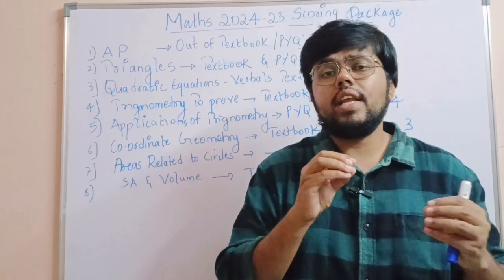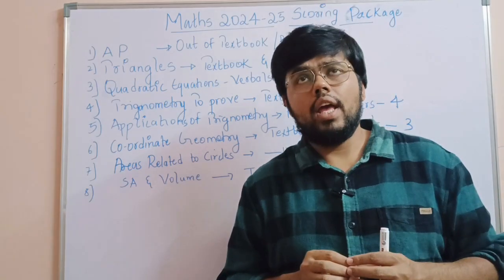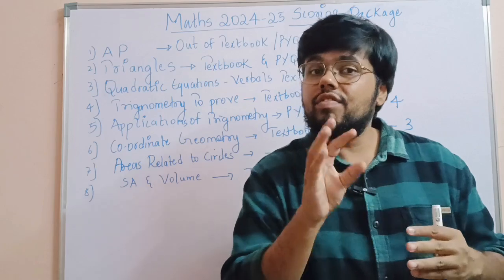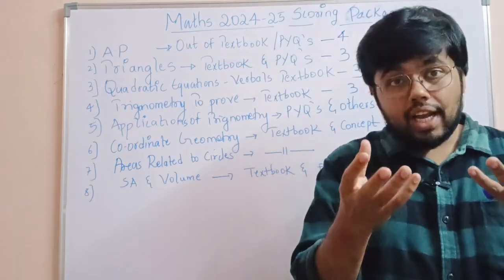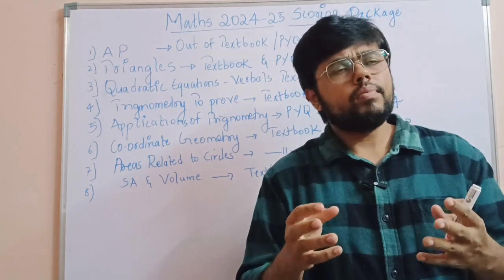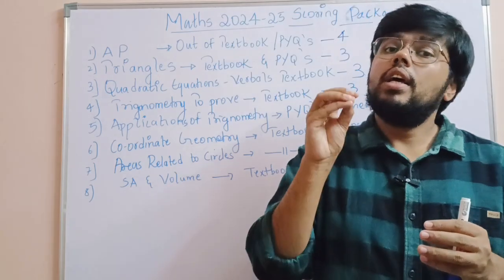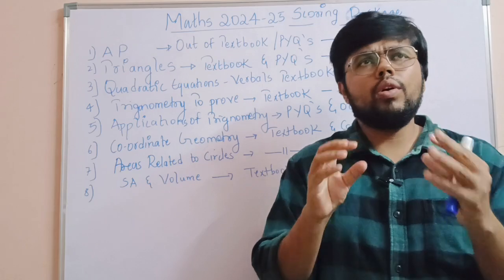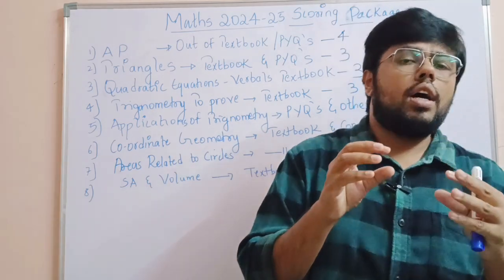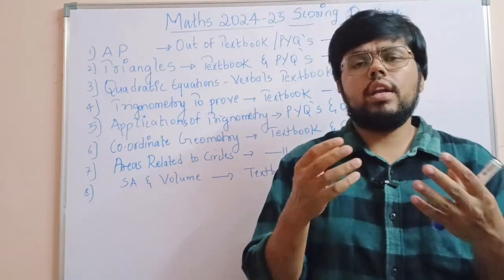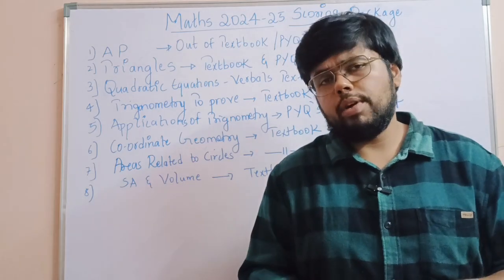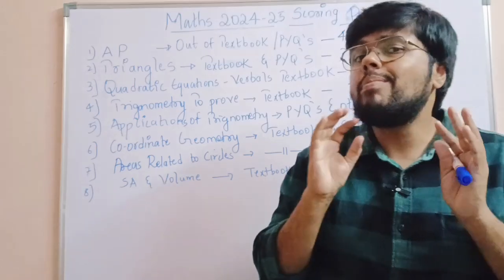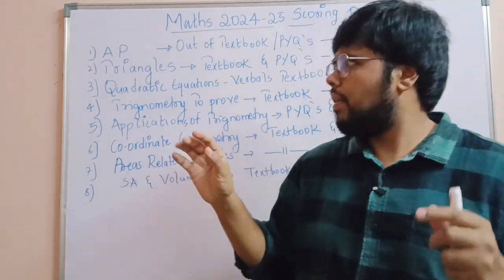For five marks, in the model paper there are applications of trigonometry and surface area questions. Sometimes BPT theorem can also be asked for five marks, or questions from AP. But if you see these two papers, the most probable topics are generally surface area or application of trigonometry. So where do you have to practice for five marks? Five marks, three marks, four marks — everything will come one by one.